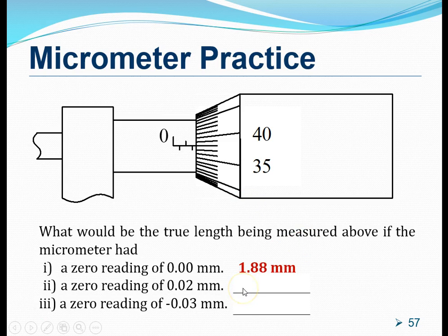What happens if the micrometer has a positive zero error of 0.02 millimeters? If what we read is 1.88 millimeters and there's already a 0.02 millimeter positive zero error, we subtract this amount from 1.88, giving us 1.86 millimeters. What happens if there's a zero error reading of negative 0.03? We will have to add this number to 1.88, giving us 1.91 millimeters.